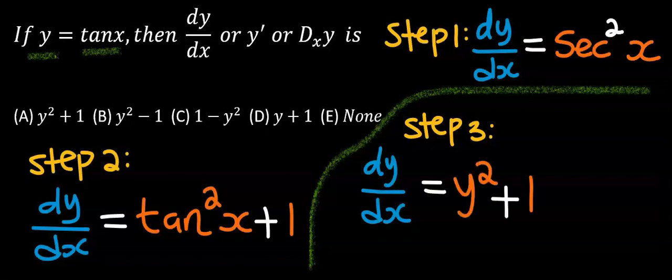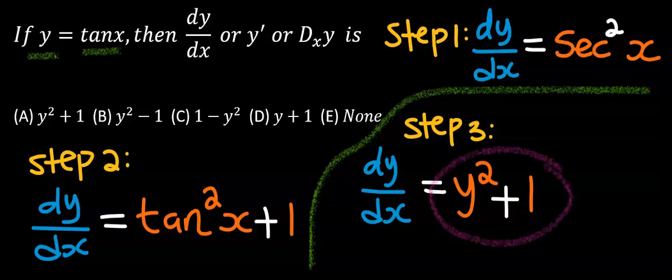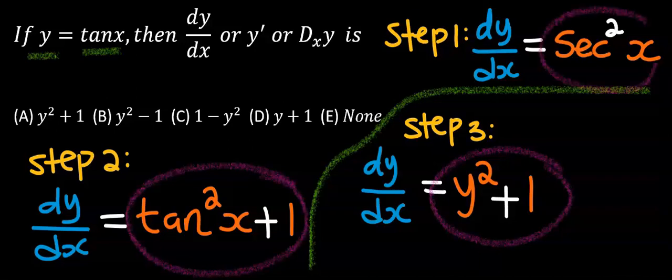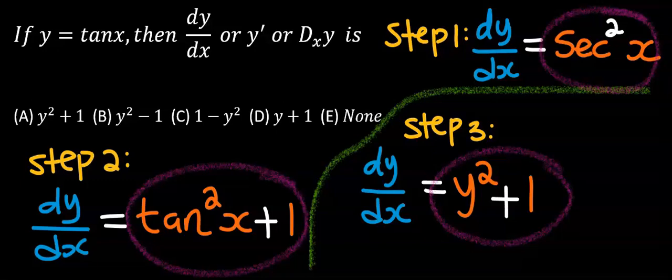Hence, we are going to have y squared plus 1 instead of tan squared x plus 1, which will actually replace sec squared x. From the options, our answer is a.